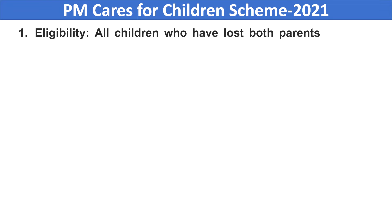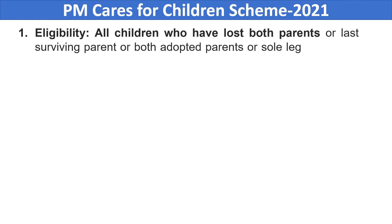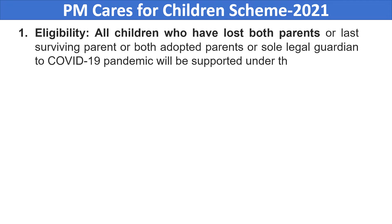The eligibility condition is: all children who have lost both parents, or the surviving parent, or both adopted parents, or the sole legal guardian to the COVID-19 pandemic will be supported under the scheme. Whether it is a legal guardian, adopted parents, or a surviving parent who died during COVID, the children left behind are brought under PM Cares for Children's Scheme 2021.